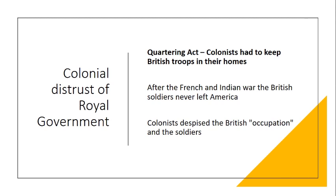So we said there were three things driving the colonists away from Britain. Number one was the French and Indian War. Number two was the taxes. Number three is colonial distrust of the royal government. Over time, the American colonists felt independent and unique, but they were no longer being treated like British citizens, and they started to distrust the king of Britain.